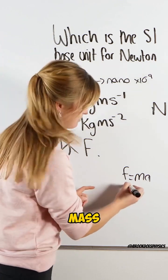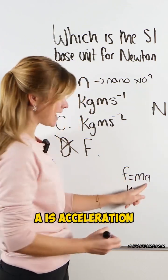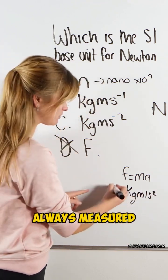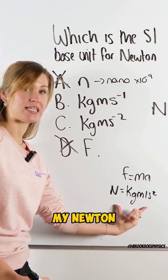So M is mass. Mass is measured in kilograms. A is acceleration. Acceleration is meters per second squared. And forces are always measured in Newton. So that's what my Newton is equal to.